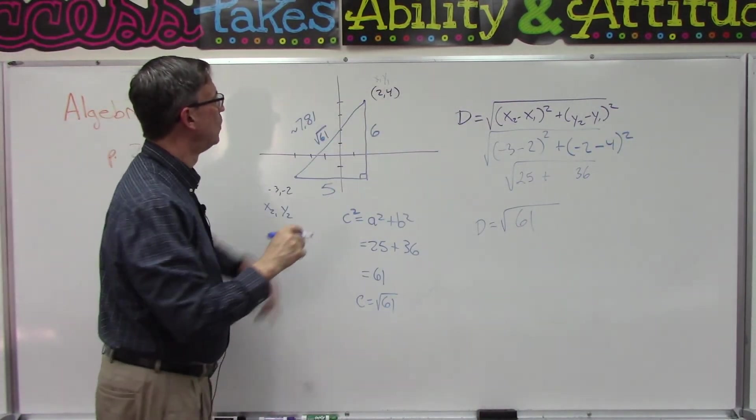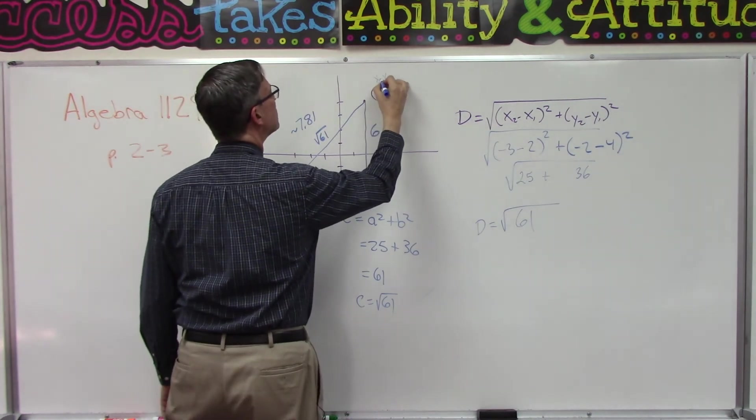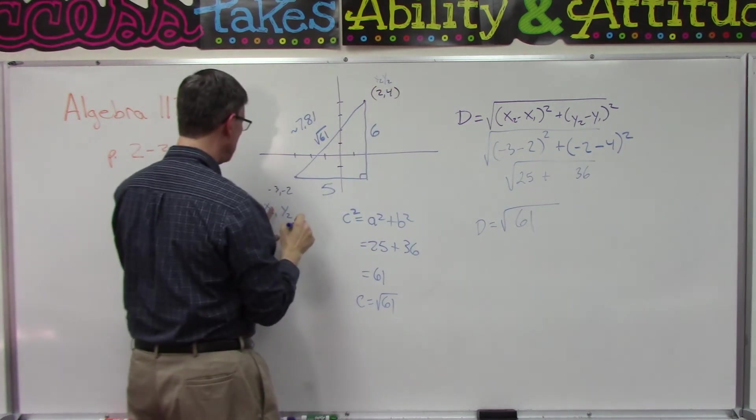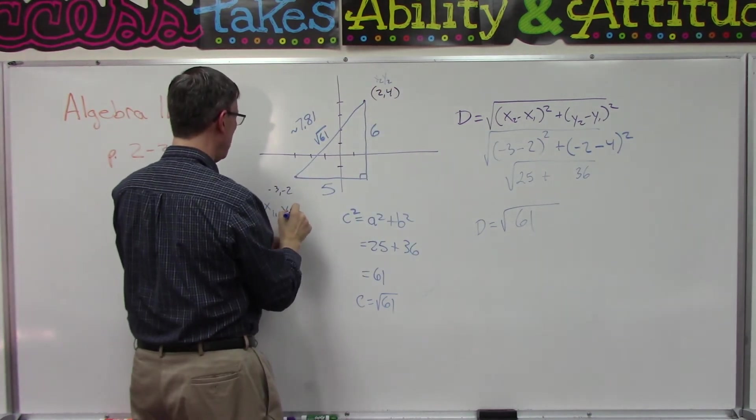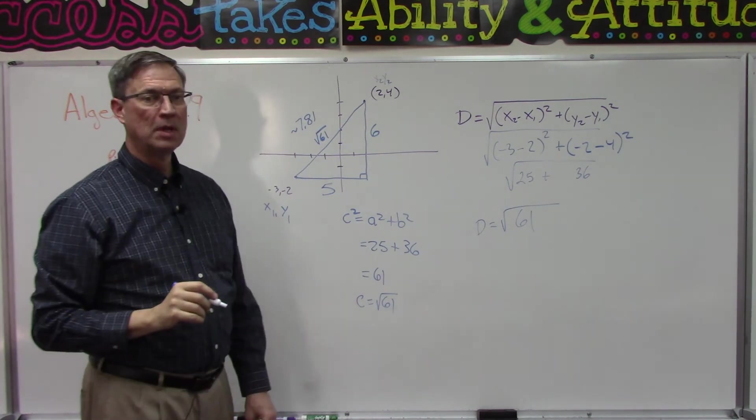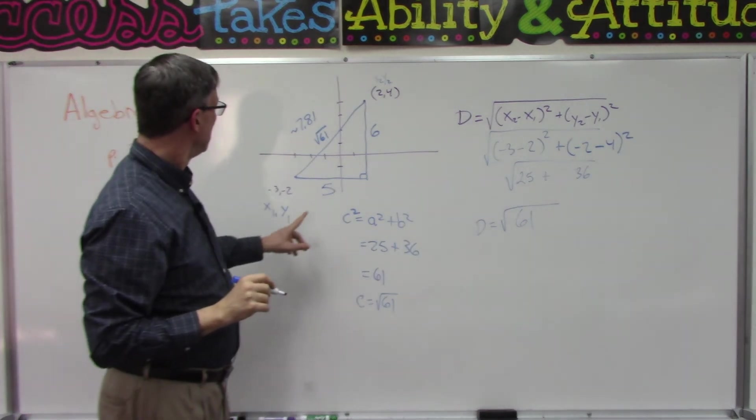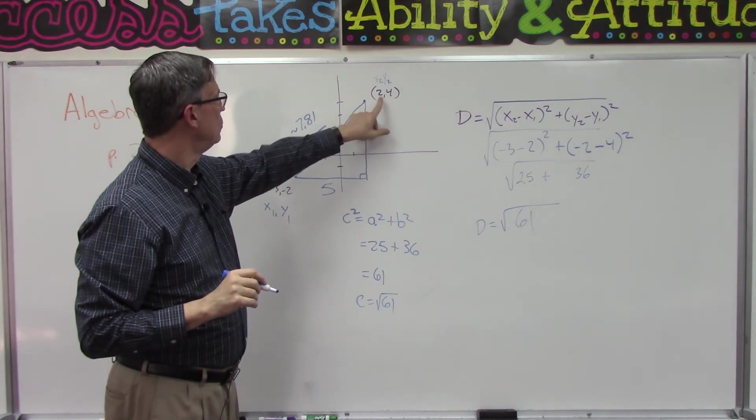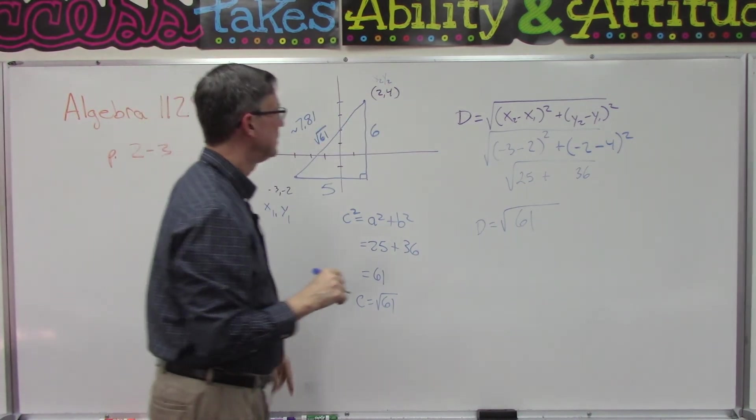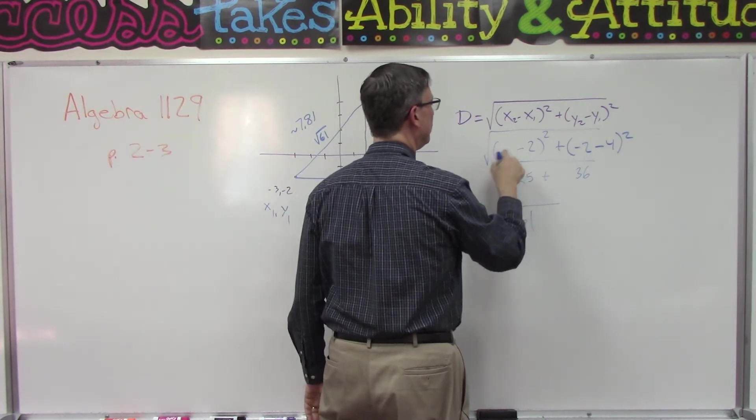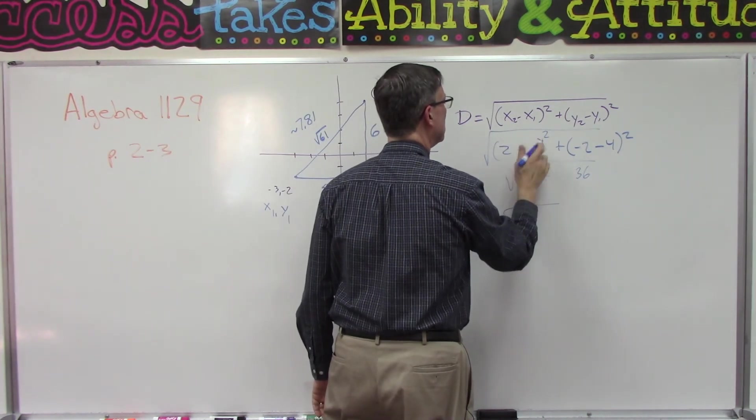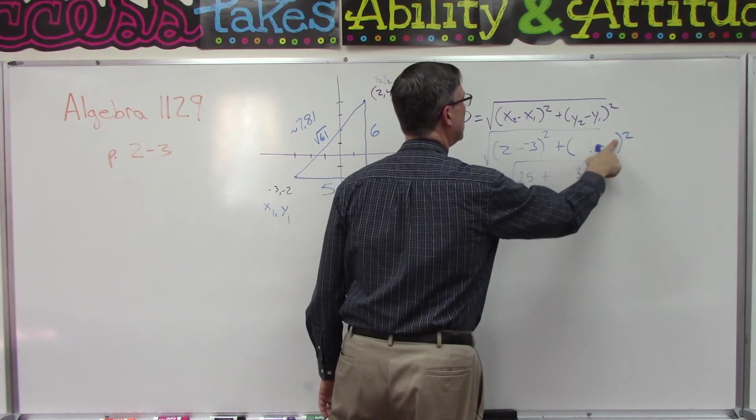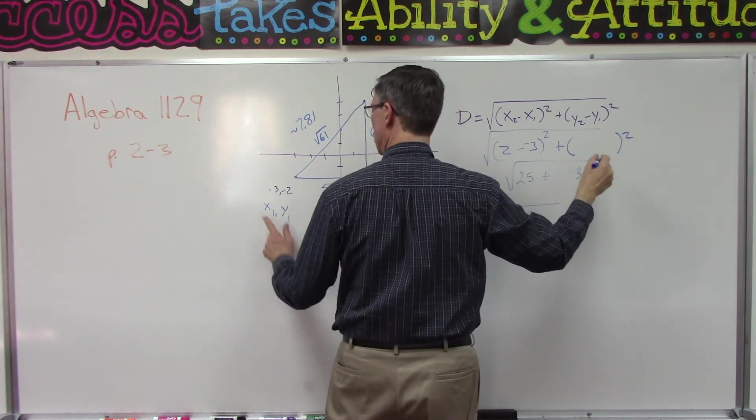They say, Mr. Enger, what if I wanted to make this one x2, y2, and this one to be x1, y1? Would that make a difference? Well, let's take a look at it here. If I started with this as being x2, I would say 2 minus negative 3, 2 minus negative 3, and then over here I would start with y2, which is 4, minus negative 2.